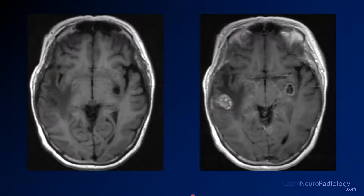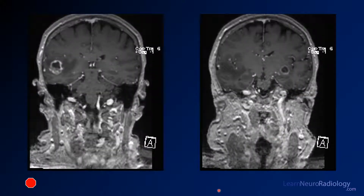On pre and post contrast imaging, the mass is hypointense on pre-contrast and enhances avidly on post-contrast. The lesion in the left basal ganglia also enhances but with a different pattern — centrally necrotic and peripherally enhancing. Additional coronal images confirm those same masses in a different projection, showing again the centrally necrotic areas with peripheral enhancement.